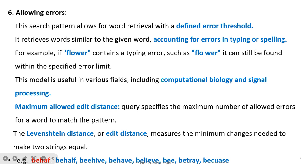The query specifies the maximum number of allowed errors for a word to match the pattern. The famous distance measure used is Levenshtein distance, or edit distance, which measures the minimum number of changes needed to make two strings equal. For example, in spelling error correction, if the correct spelling is 'behalf' but the user types 'behf,' the system finds closer spellings like 'behalf,' 'behave,' 'believe,' and 'betray,' selecting the correct replacement based on minimum edit distance.